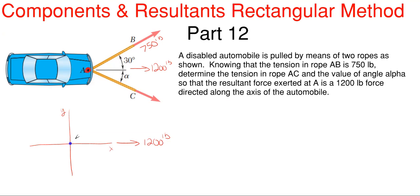And then we would have our two ropes in tension, with this one being 750 pounds up here at 30 degrees off the horizontal, and then our unknown FAC down here which is alpha below the horizontal.